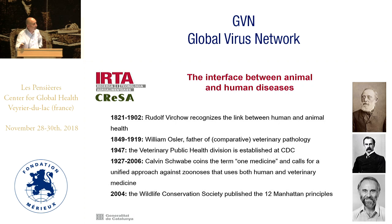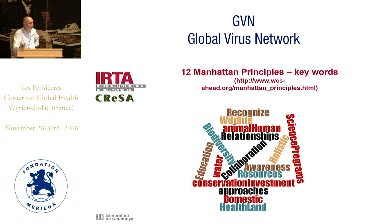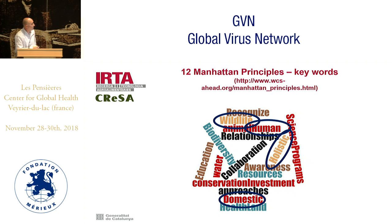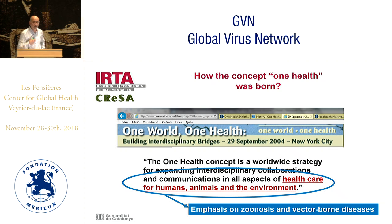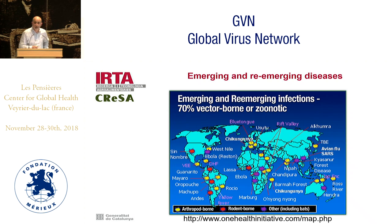Already in 2004, the Wildlife Conservation Society published the 12 Manhattan Principles — proposals, rules, and wishes emphasizing research, awareness, and preparedness related to zoonoses, as well as diseases related to the environment, animals, and humans. The word cloud of the major keywords of the 12 Manhattan Principles shows that wildlife, humans, domestic animals, and a holistic approach are elements that should be considered when tackling the one health concept. Major emphasis should be put on zoonoses and vector-borne diseases.